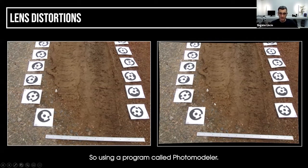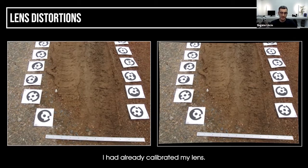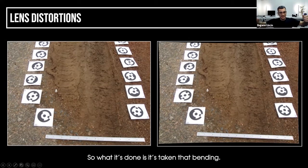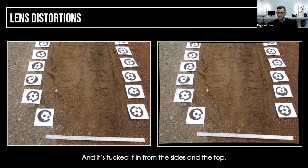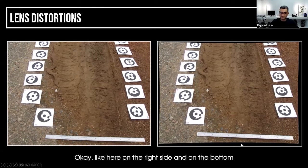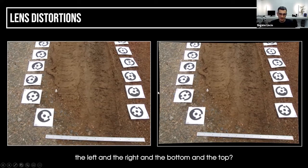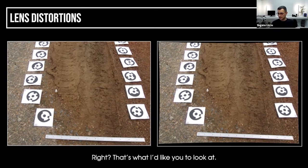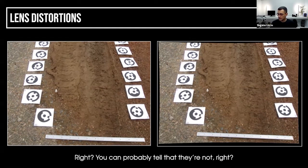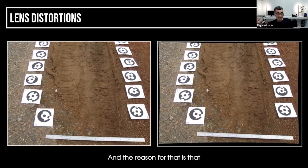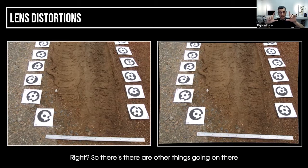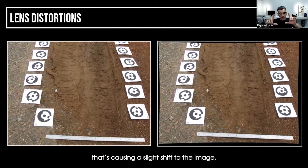However, we can correct for this. Using a program like Photo Modeler, after calibrating the lens, you can tell it to remove the distortion. You'll see little black spaces in the corrected image — it has taken the bending and tucked it in from the sides and top. When looking at the corrected image on the right, notice whether the black borders on the left, right, bottom, and top are perfectly equal. They're actually not perfectly the same, because there are other types of distortion causing a slight shift to the image.